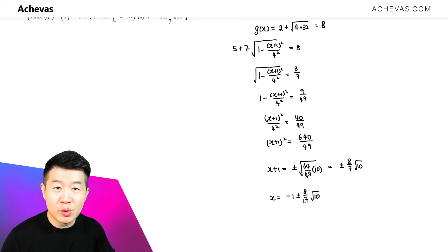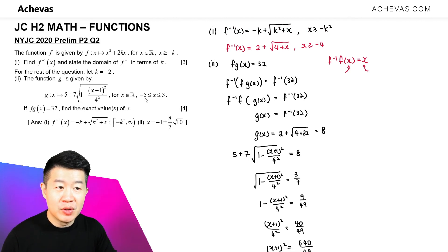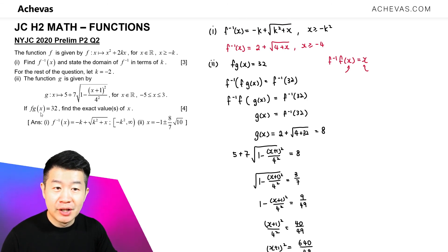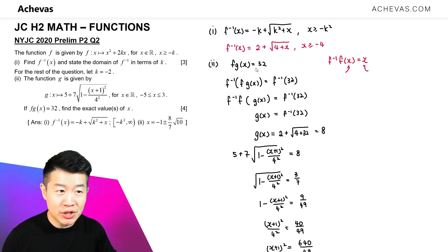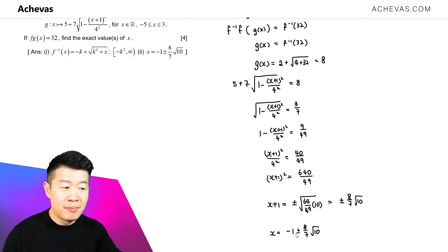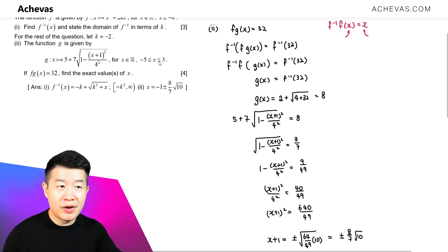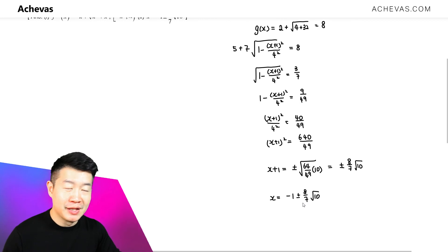Before we end this question, let's do a quick check. We know x is supposed to be between minus 5 and 3 for the function g, and the domain of fg is the same as the domain of g. So we want to make sure x is between minus 5 and 3. Pressing both values into the calculator — minus 1 plus (8/7)√10 and minus 1 minus (8/7)√10 — both values are between minus 5 and 3. So our final answer includes both solutions.